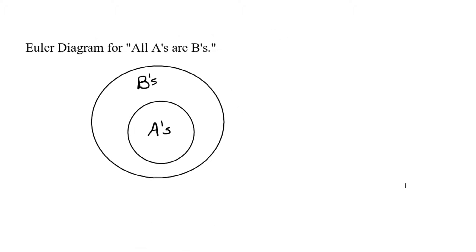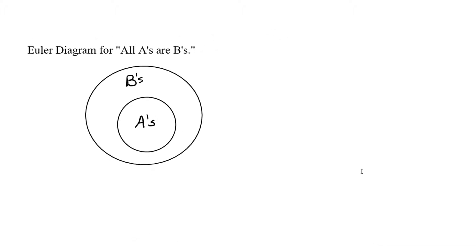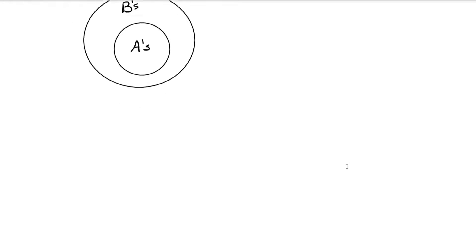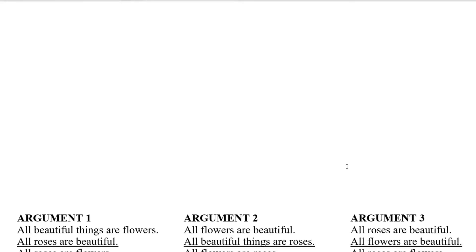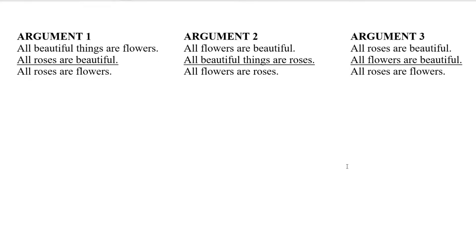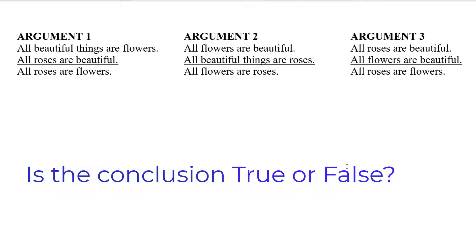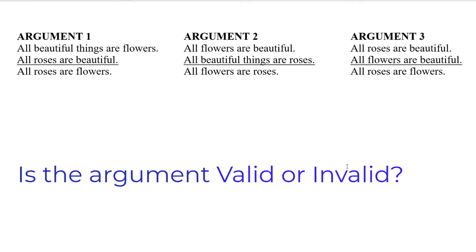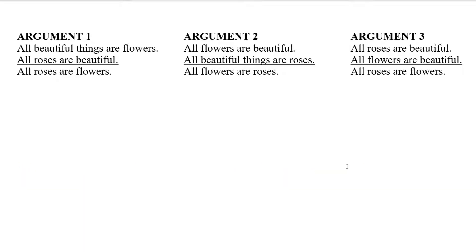But in this video, we're just focusing on the difference between validity and truth. So we're going to look at these three arguments, which only have statements of the form 'all A's are B's.' And we're going to focus on when the conclusion is true or false, and when the argument is valid or invalid, which are two different concepts.